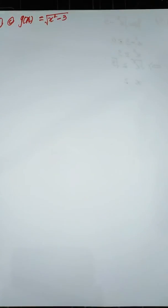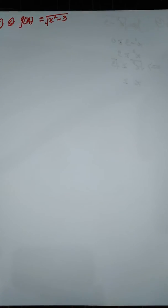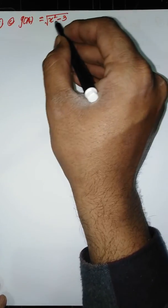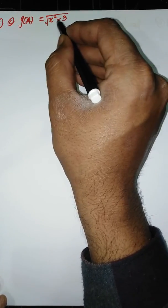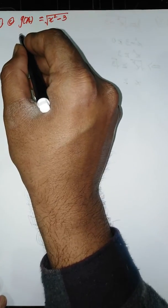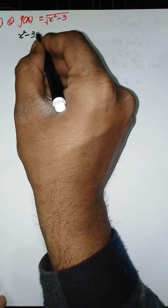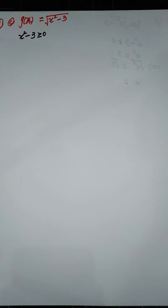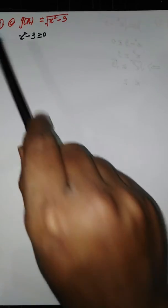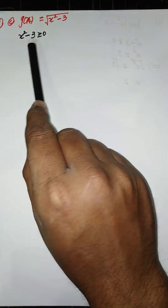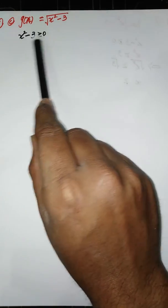We already discussed that whenever a square root term comes in our function, that term must be greater than or equal to zero — it must be positive. So X squared minus 3 must be greater than or equal to zero. We have to find the values of X from the set of real numbers that satisfy this inequality.